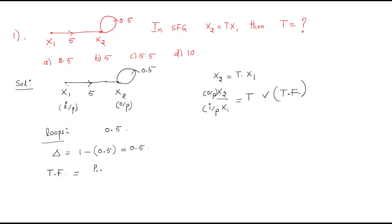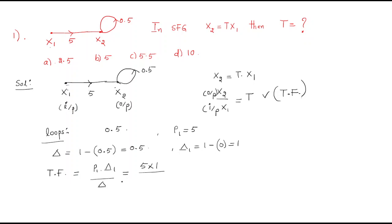Now applying Mason's Gain Formula, the transfer function = (P1·Δ1) / Δ. We have only one forward path, so P1 is the gain of that forward path, which is 5. Δ1 means the value of Δ computed by removing all loops touching forward path P1. Since the 0.5 self-loop is touching this forward path, Δ1 = 1. So the transfer function = 5 × 1 / 0.5 = 10.